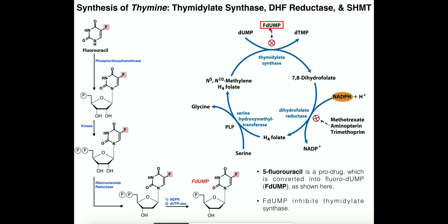Fluorodeoxy-UMP is a very good inhibitor of thymidylate synthase, and unlike the dihydrofolate reductase inhibitors discussed earlier, it directly inhibits the production of DTMP by blocking the enzyme that makes it. This type of drug is used to treat cancer, and while newer agents have largely replaced it, it is still used to some extent. In summary, this cycle generates DTMP and requires both DUMP and a one-carbon donation from N5-N10-methylene tetrahydrofolate. The pathway integrates folate metabolism and serine catabolism.